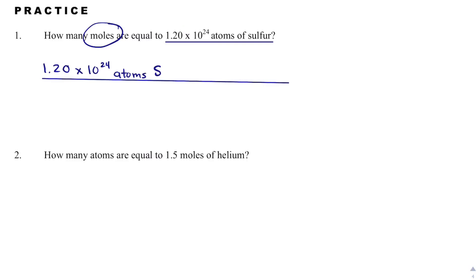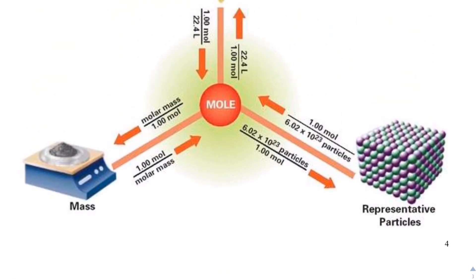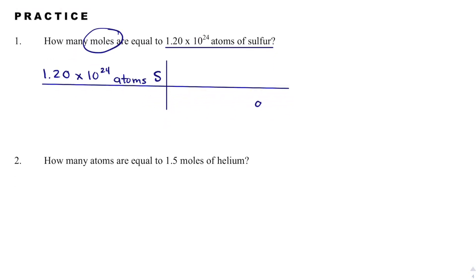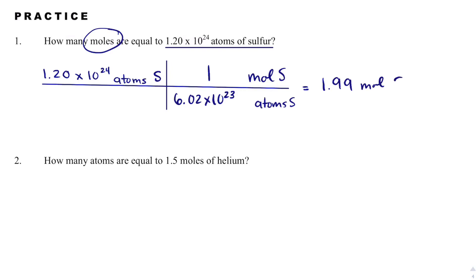I'm going to build a fence and convert. Looking at the mole map, moles are in the middle, so I can convert to moles from anything in just one step. I'm given 1.20 times 10 to the 24th atoms of sulfur, and I'll convert to moles of sulfur. In one mole of sulfur, there are 6.02 times 10 to the 23rd atoms of sulfur. When I math that out, I get 1.99 moles of sulfur. Moles will typically be a number between 0 and maybe 10 — a pretty low number.